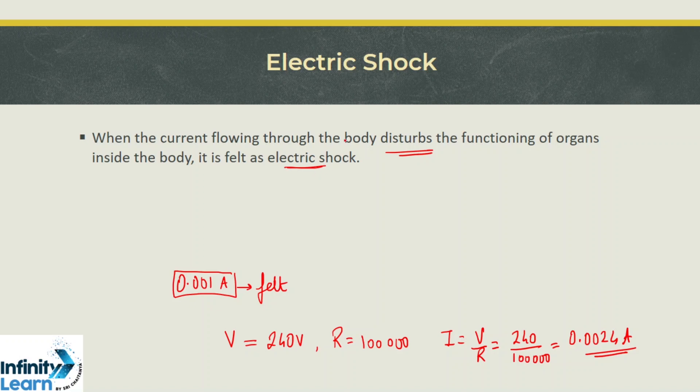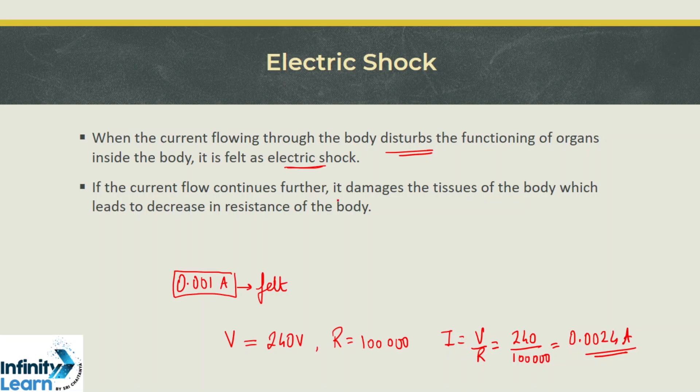Now going ahead, if the current continues to flow through the body, it damages the tissues of the body and these tissues which are damaged lead to decrease in resistance of the body. We have already seen the current and resistance are inversely proportional. So if the resistance decreases, current increases if the current is flowing continuously through the body.